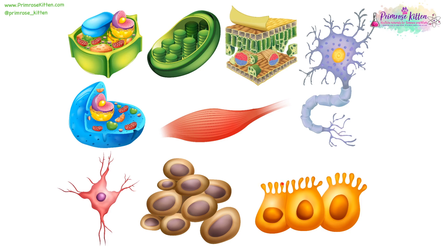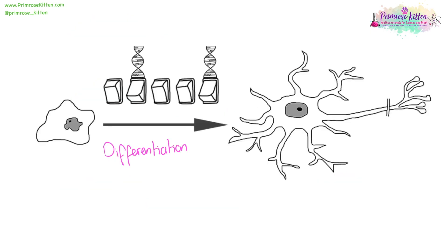Here we have villi, which give a large surface area. Here the cells are very tall to provide structure. Here the cells have a very long body so that the neurons can travel a long distance. And the muscle cells are going to stretch and contract. All cells start off looking the same with your basic cell structure, and then various different genes will be turned on and turned off — that's when differentiation will take place. And the cell will grow a really long axon, or it will grow the villi, or it will turn into a leaf cell.